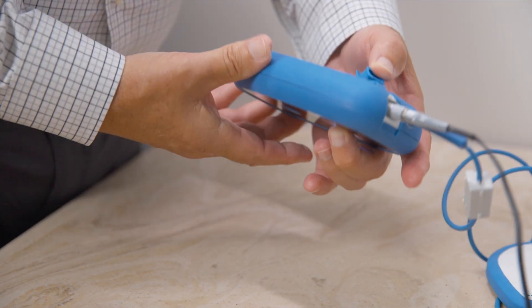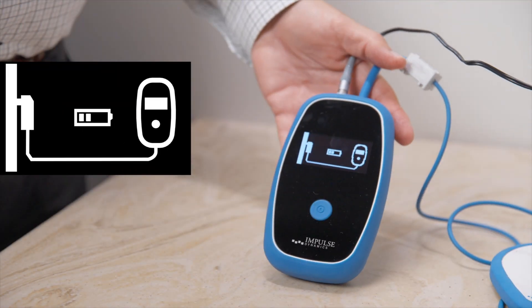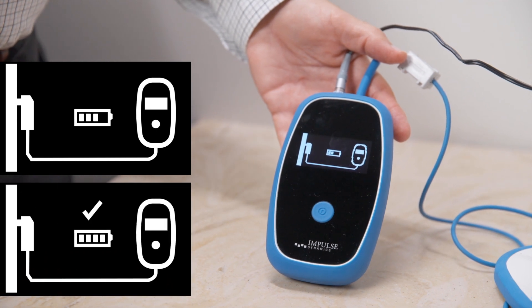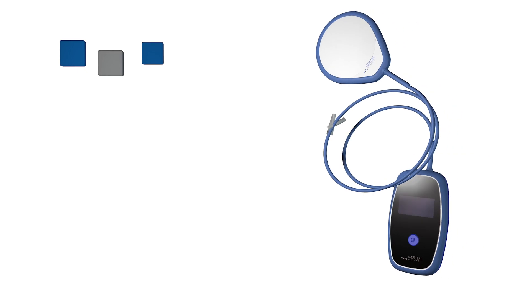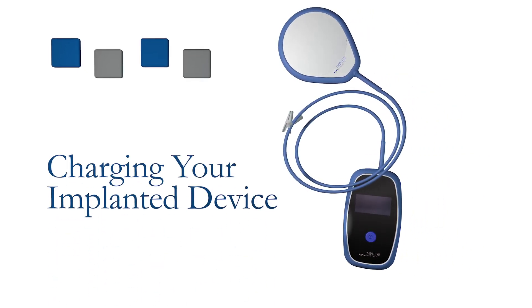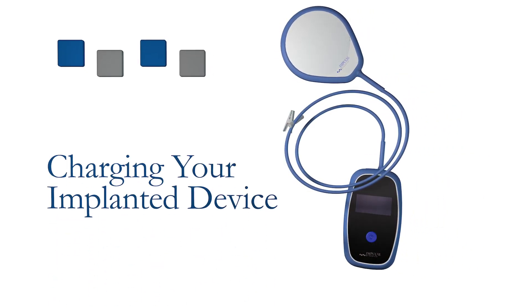When successfully connected, the display will show either a flashing battery icon or a check mark. The battery pack in the charger is full. Here is how to perform your weekly charging of the Optimizer device.